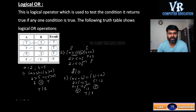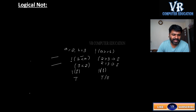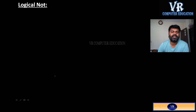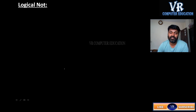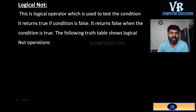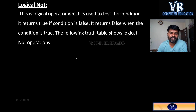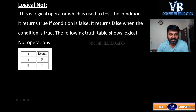Next we move to logical NOT. It will negate the expression — means if the condition is true, the result will be false; if the condition is false, the result will be true. The logical NOT operator is used to test the condition. It returns true if the condition is false, and returns false when the condition is true.